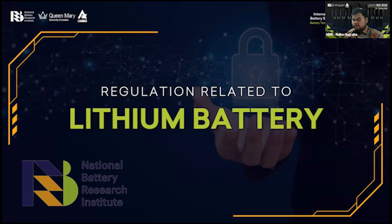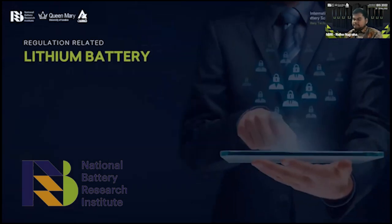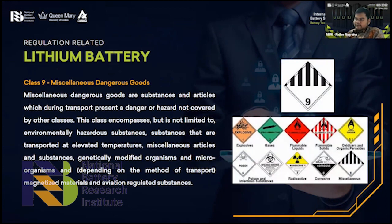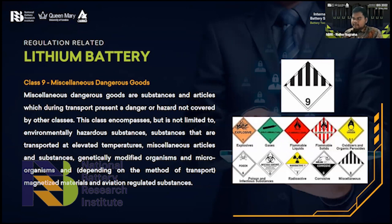Regulation related to lithium battery: lithium-ion batteries are classified as class nine dangerous goods. Dangerous goods are classified into nine hazard classes — explosive, gases, flammable liquids, flammable solids, oxidizer, poisonous, radioactive, corrosive, and miscellaneous. The battery is classified as class nine because it can trigger all of the other hazards, like it can be explosive, produce gases, and be flammable — all hazards are combined in this class.